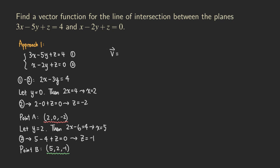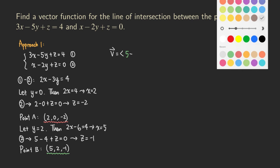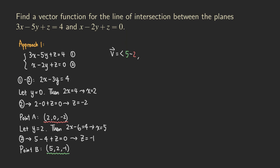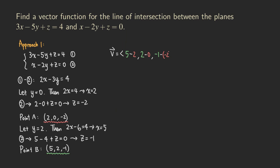So point A is in one color and point B in green. We compute B minus A: (5 − 2, 2 − 0, −1 − (−2)) = (3, 2, 1). That's our direction vector.